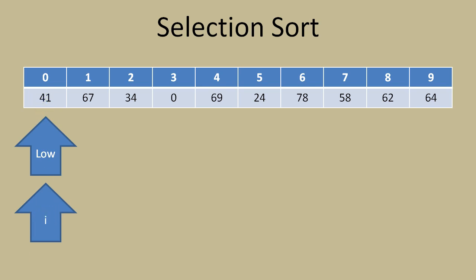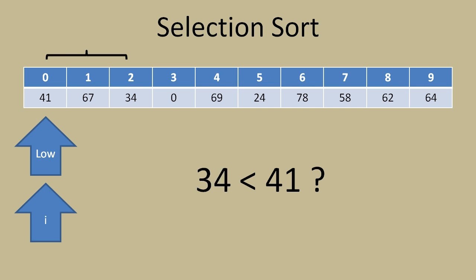We'll have a second indicator to keep track of where we're at. The first thing we do is compare element 0 and 1 - values 41 and 67. Is 67 lower than 41? No, so the assumption of 41 being the lowest is okay. Then we compare the next one: is 34 less than 41? It is, so we move our low indicator to subscript 2 in this array.